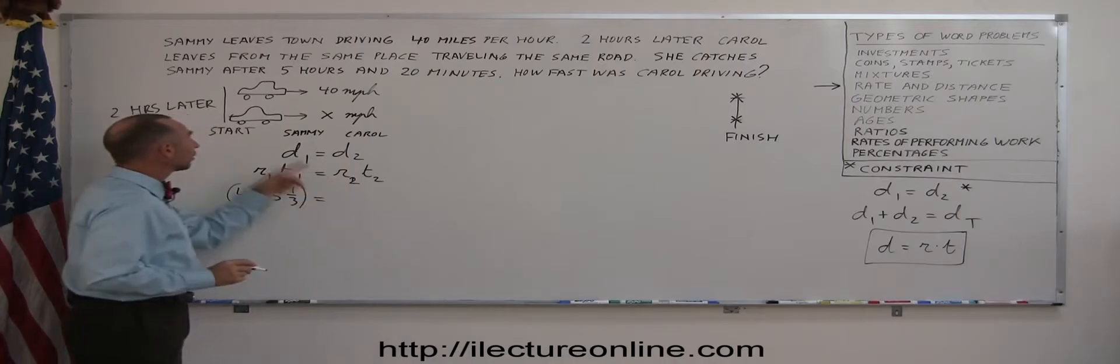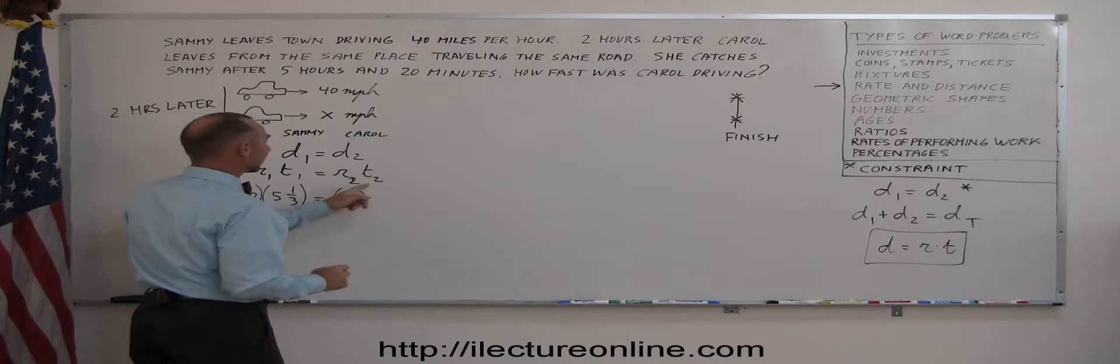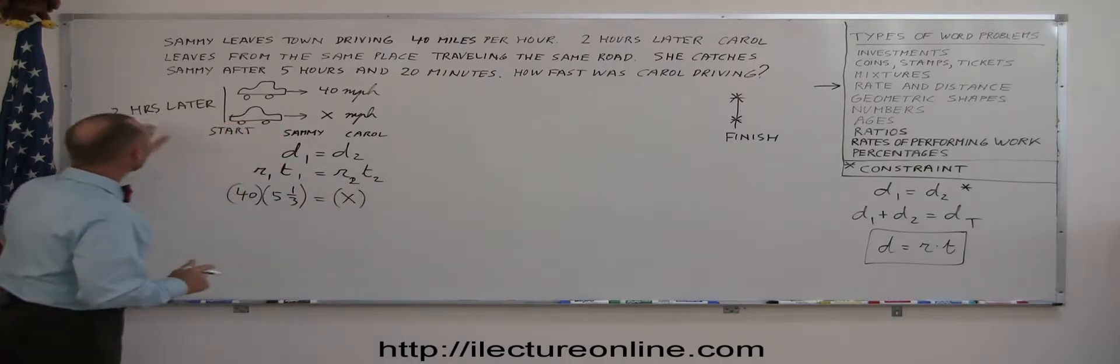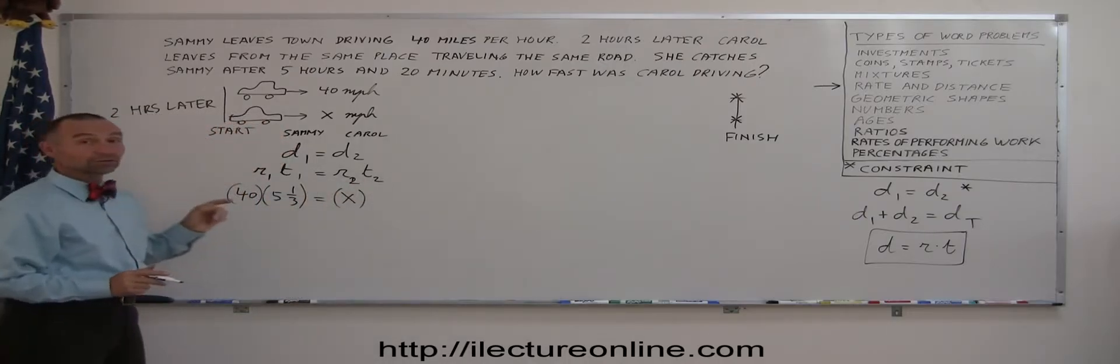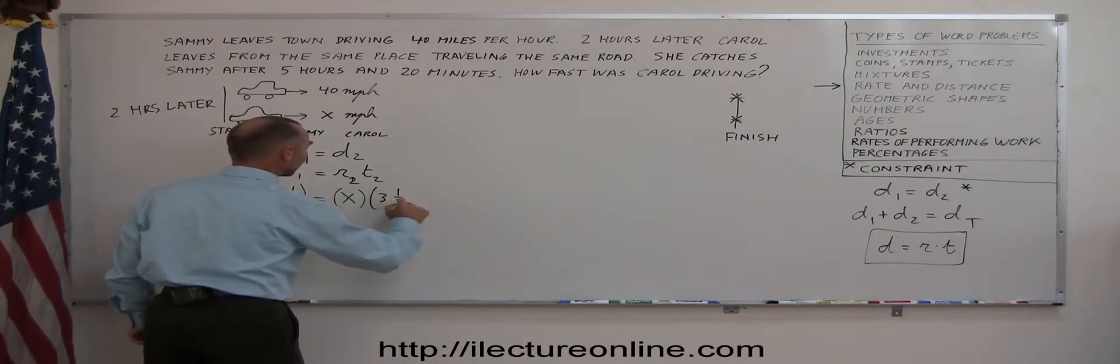Equals the rate of Carol. Since we don't know what that rate is, we'll write x. And the time that Carol drives, well, she leaves 2 hours later. So she travels 2 hours less. So it's 5 and 1 third minus 2. That gives me 3 and 1 third hours.